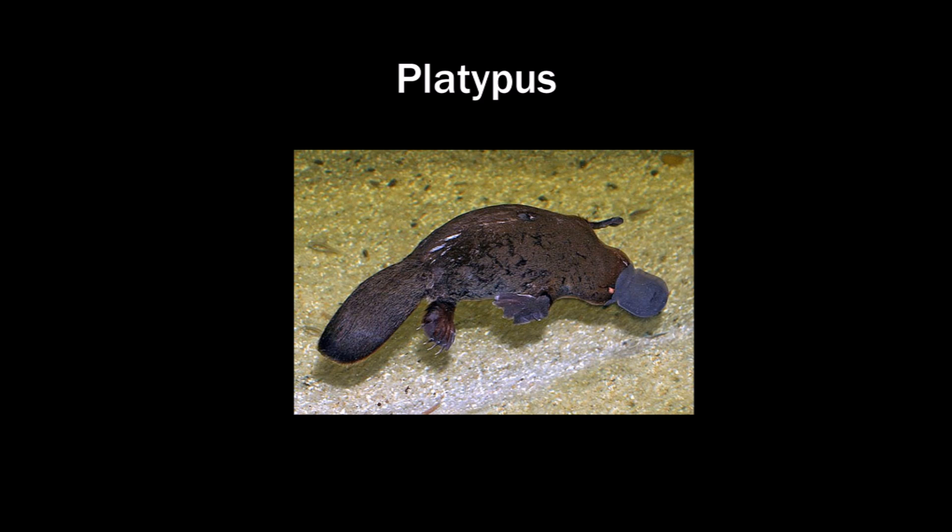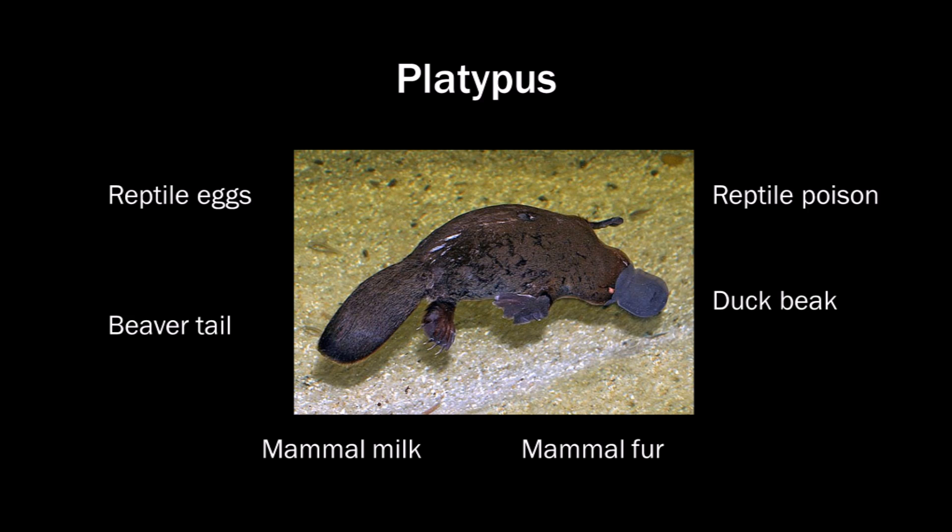Let's take another example. This is the platypus. It has mammal fur and gives mammal milk to its babies, so that suggests it is a mammal. It even has a beaver tail. But it has a beak like a duck, it lays reptile-like eggs, and the male has a reptile poison. So what is it? And what were its ancestors? This doesn't make sense.